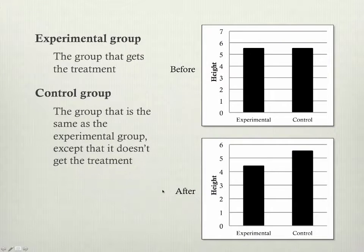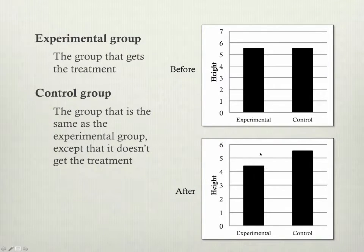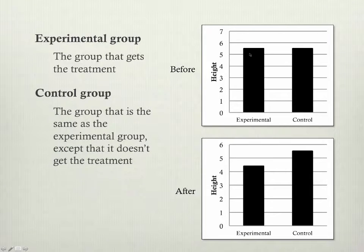And then after the experiment, when we see that the experimental group is indeed shorter, we can be confident that this change — this effect — was caused by the independent variable, by our shrink ray.